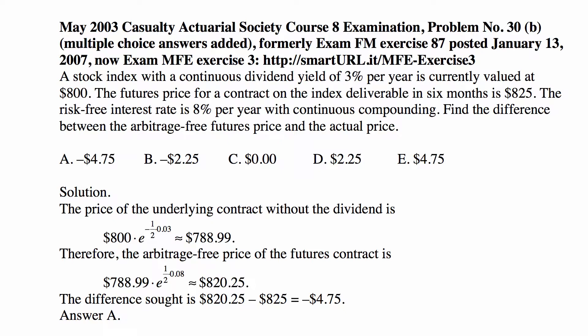The arbitrage-free price of the futures contract, which equals the forward price, is that amount accumulated at the risk-free rate of 8% continuously compounded to the end of the contract. We discount the dividends from the entire contract by taking them out with the present value factor, then accumulate the price without dividends through the entire contract, and we get $800.25.